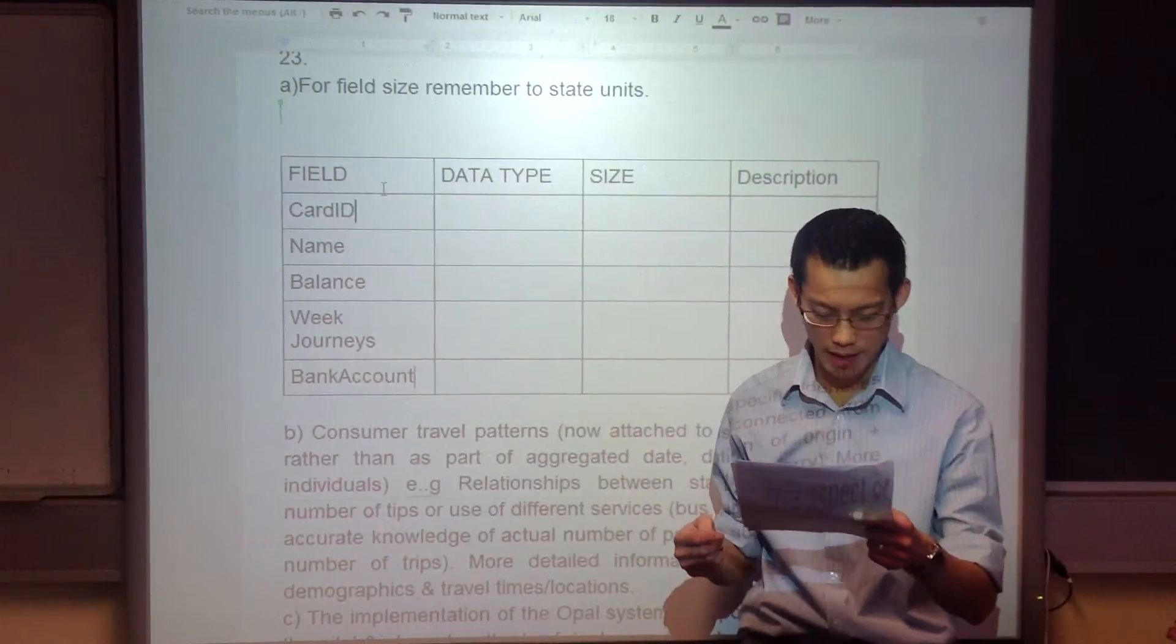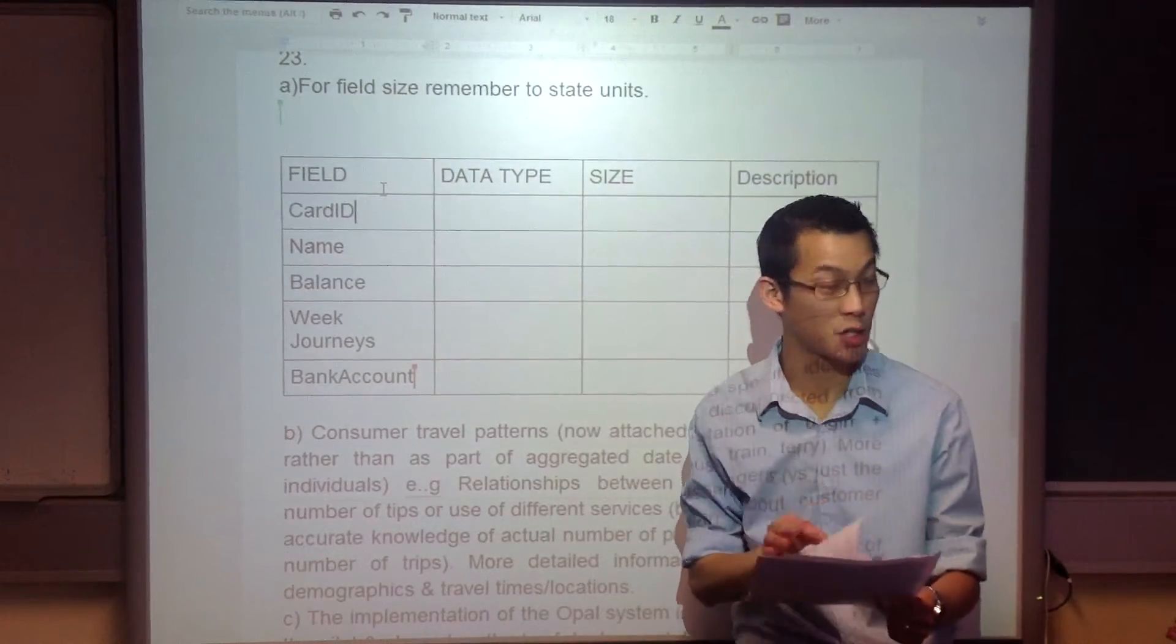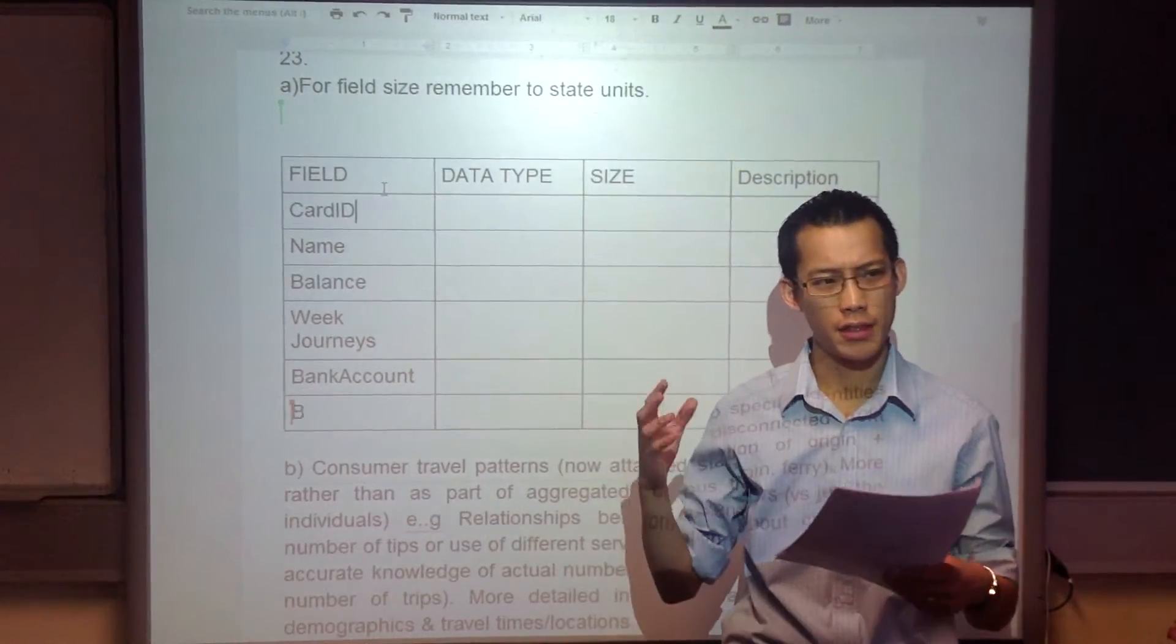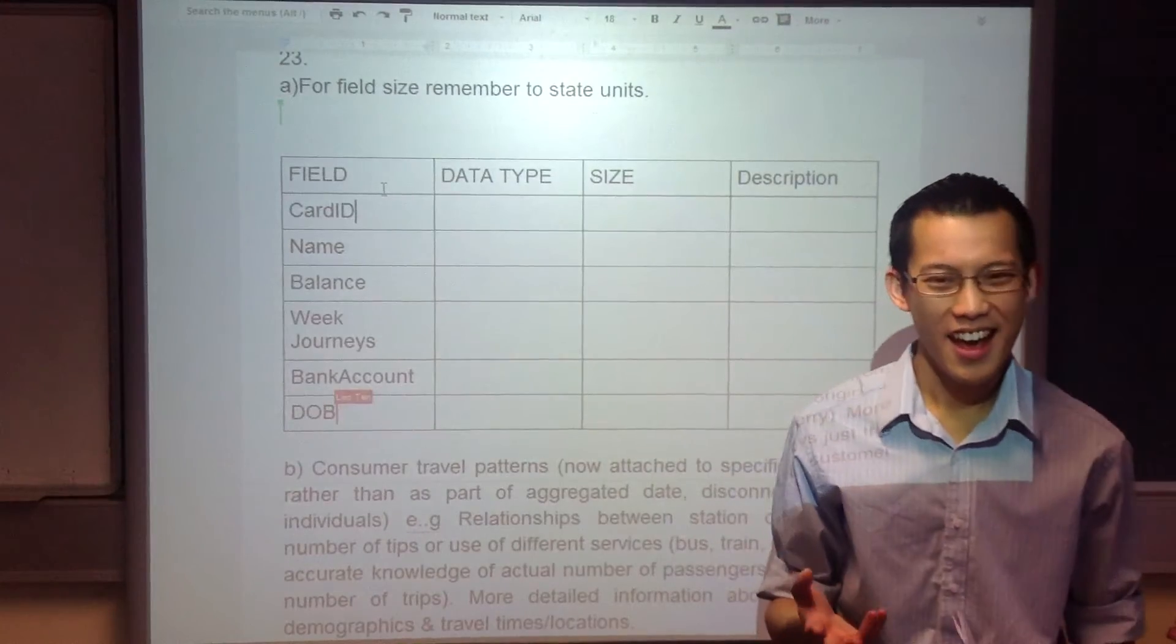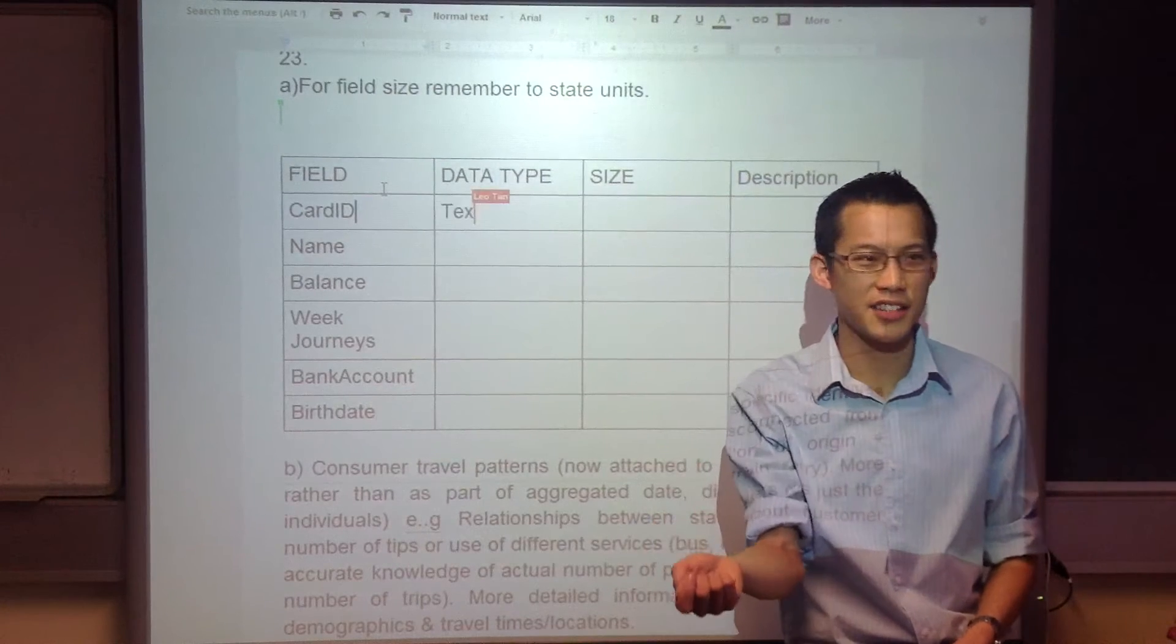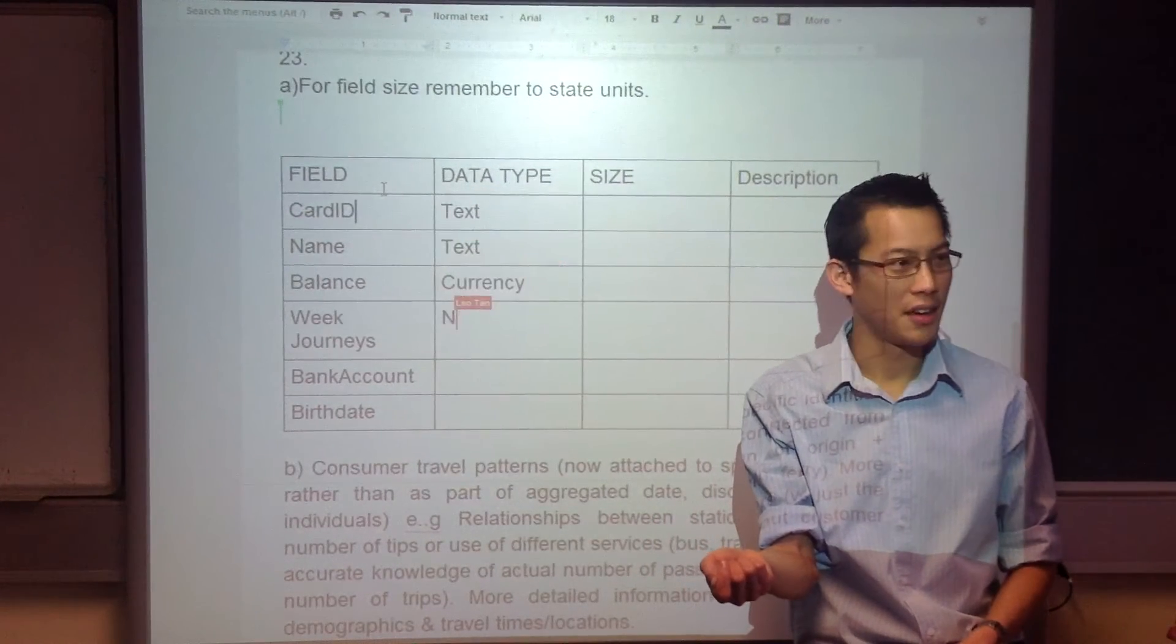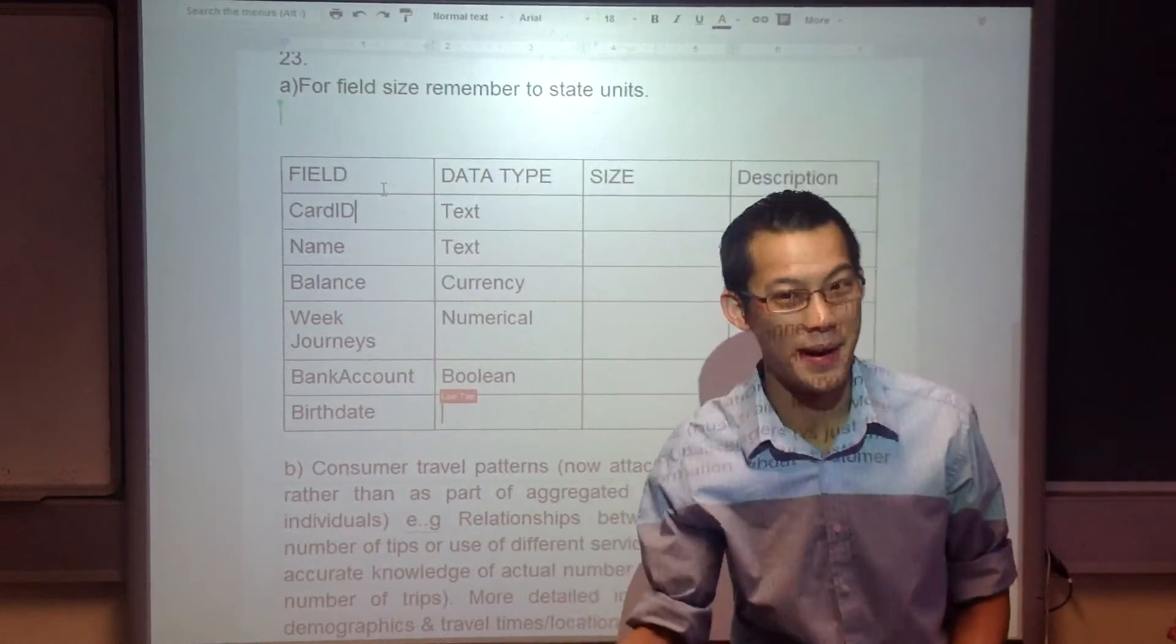Some of you put things like bank account number. Now, I'll get to this when I have a look at part D, I'm going to talk about the social and ethical issues. But it's really very unlikely that the Department of Education, not Education, Department of Transport, that they'll put someone's bank account number on the card that they're actually carrying around with them.